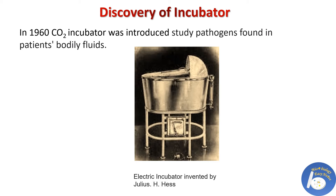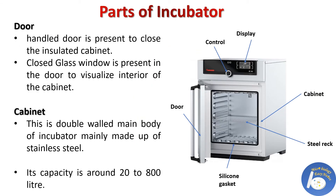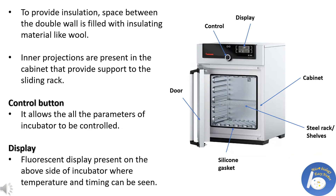Earlier lab incubators were very simple. Julius H., an American physician, was the first one who introduced the electric incubator. Today's incubators are advancements of this electric incubator. The first part of the incubator is the door, which is present outside the cabinet and helps to close the insulated cabinet. A closed glass window is also present in the door to visualize the interior of the cabinet. Next is the cabinet — this is the double-walled main body of the incubator, mainly made up of stainless steel, with a capacity of around 20 to 800 litres.